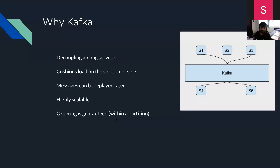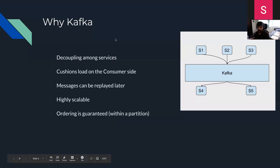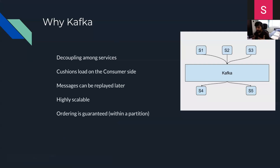Kafka is highly scalable because it provides horizontal scaling. You can have multiple Kafka brokers, as many producers dumping events to Kafka, and as many consumers. We'll discuss partitioning, scalability, and ordering in more detail with hands-on sessions. The three main sides are: producers — S1, S2, S3 producing data — then Kafka itself, which in a production environment could be hundreds of machines forming one cluster, making it horizontally scalable.